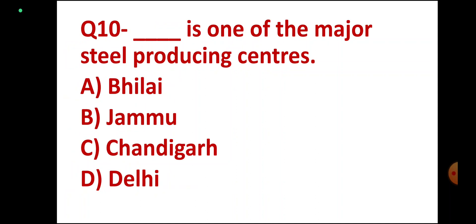Question number 10. DASH is one of the major steel producing centres. Options: Bhilai, Jammu, Chandigarh, Delhi. Correct answer: Bhilai.